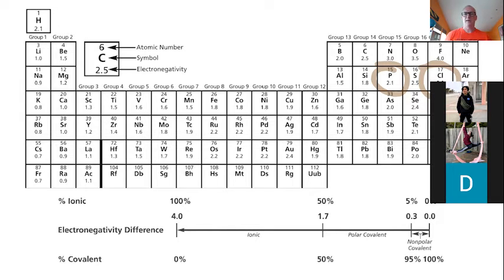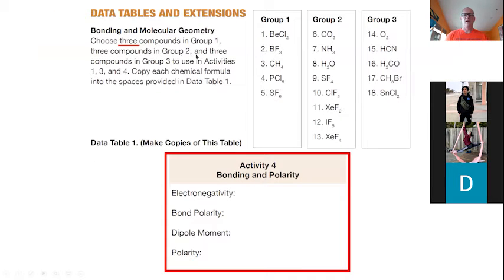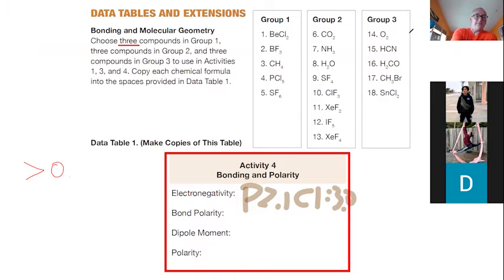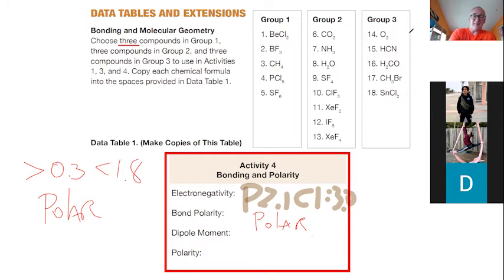So we take that information and put down the electronegativities. Phosphorus is 2.1, chlorine is 3.0. So what kind of bond polarity does that give me? We have three choices: nonpolar covalent, polar covalent, or ionic. It's polar covalent. So anything greater than about 0.3 and less than 1.8 is considered polar. Bond polarity is polar. Now what does this mean — dipole moment? Anyone tell me what that means? What is a dipole?